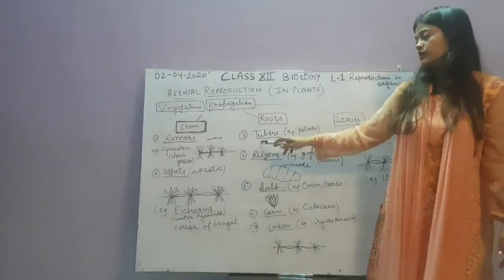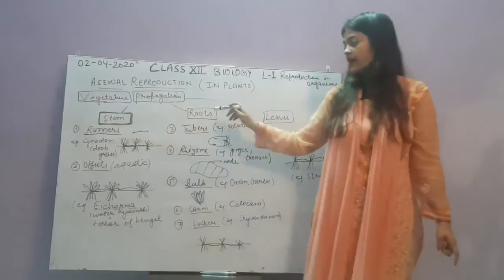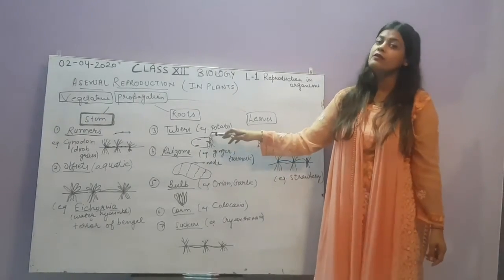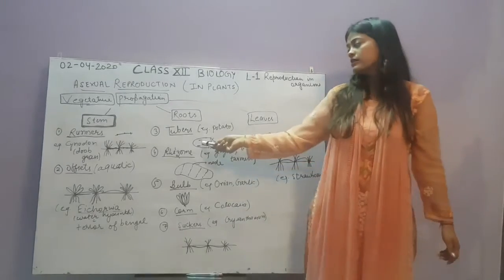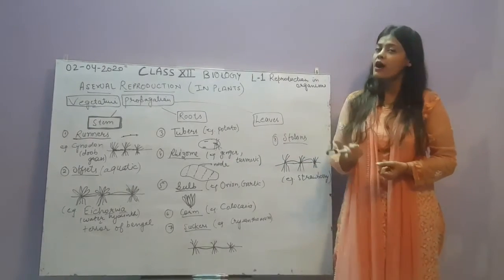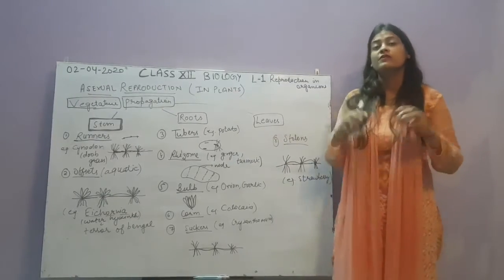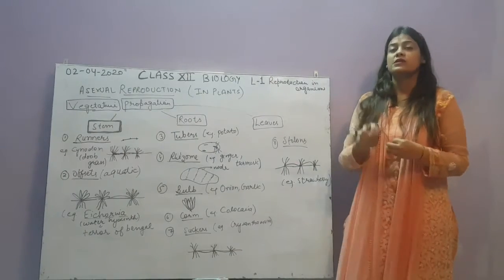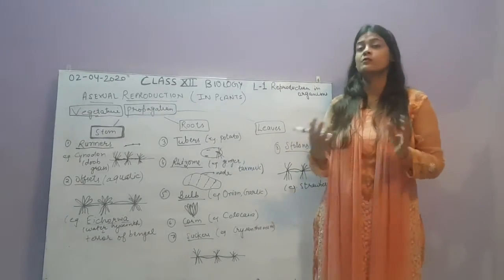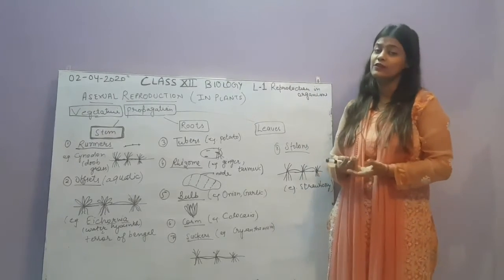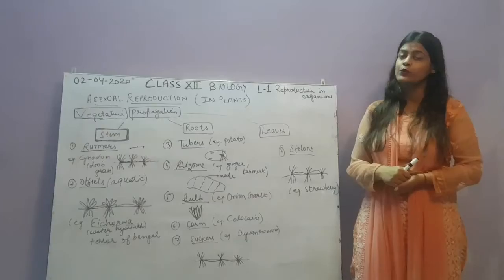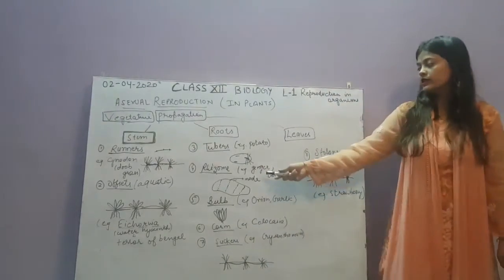Next, we will discuss underground stems. The first example is tubers, which includes potato. Potato is an underground stem. You can see scar-like structures on the potato surface, called the eye of the potato. If you sow a potato in soil or place it in a moist environment with proper temperature, green structures grow from these eyes — that is actually a new plant.